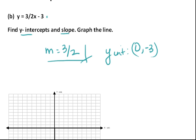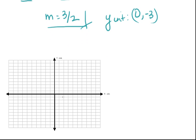Now we can use that information to graph our line. If we plot 0 comma minus 3, that's 0, minus 1, minus 2, minus 3. Then our slope is positive 3 halves. So we will go up 3: 1, 2, 3, over 2.